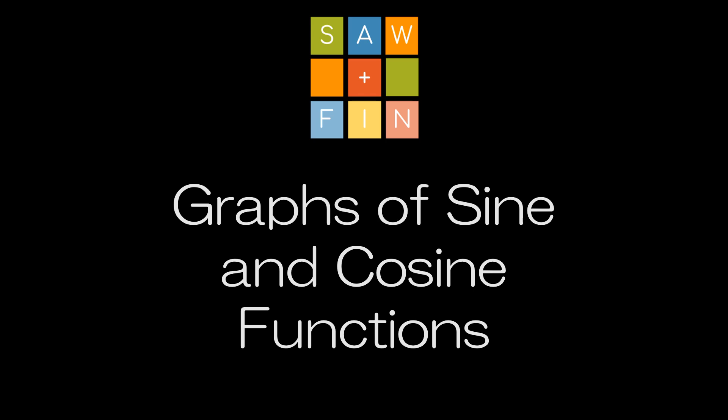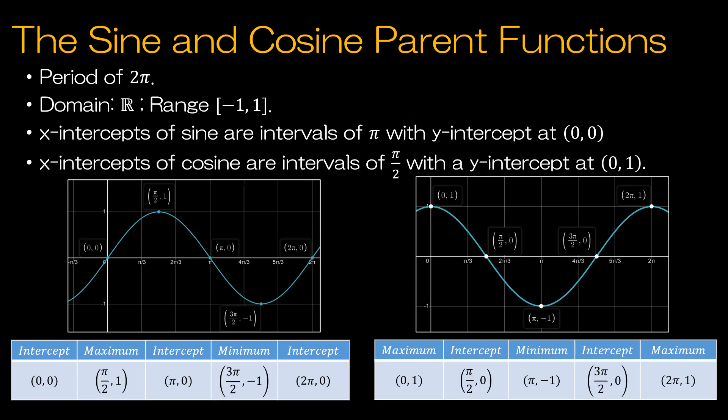Graphs of sine and cosine functions. In previous lessons, we have talked about the parent functions of sine and cosine. We know that their period is 2π, the domain is all real numbers, and the range is negative 1 to positive 1.